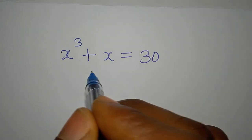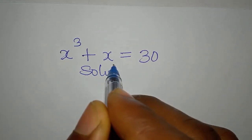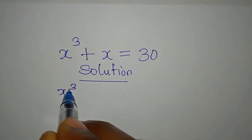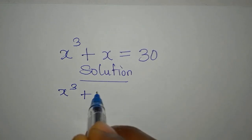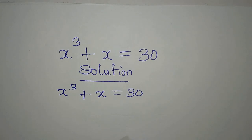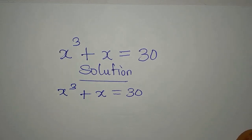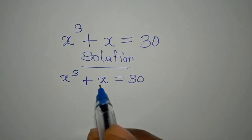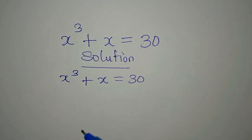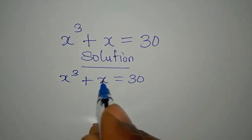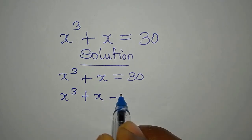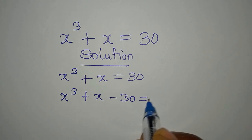Hello everyone. Here we have a beautiful olympiad mathematics problem: x to the power of 3 plus x equals 30. The question says we should solve this completely. Let's bring 30 to the left: x to the power of 3 plus x minus 30 is equal to zero.